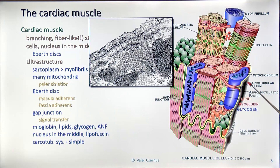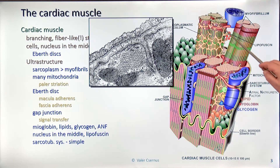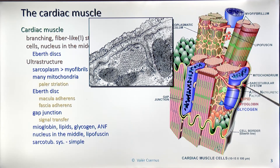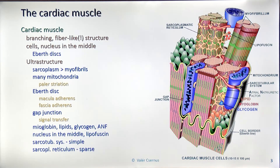We do have a sarco-tubular system, but it's much more simple. We have a single system, which is also not really rich or continuous. The reason is that the cardiac muscle cells are not innervated — they don't have the action potential that the sarco-tubular system is designed for — so it's not really useful. A sarcoplasmic reticulum is present but a little less rich compared to skeletal muscle, though it's still present and useful.